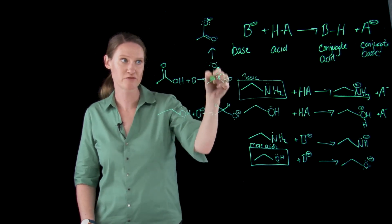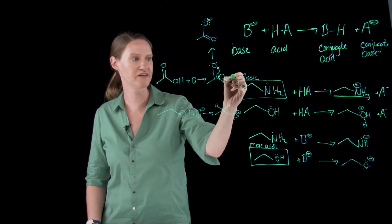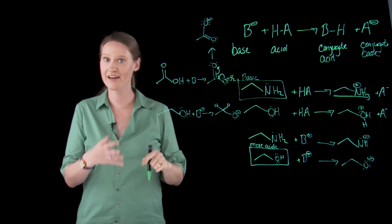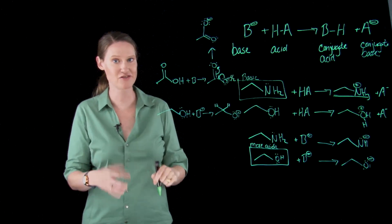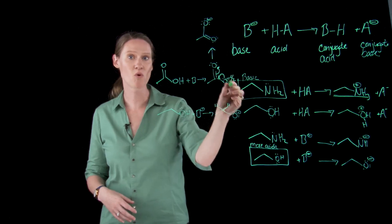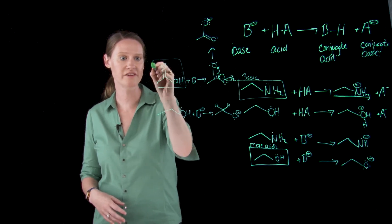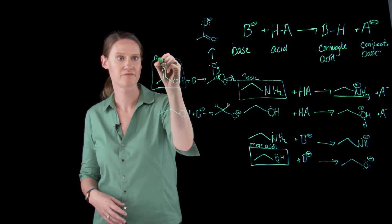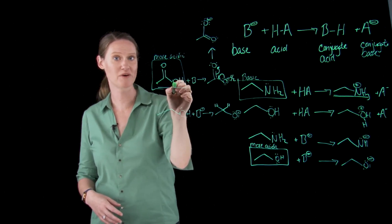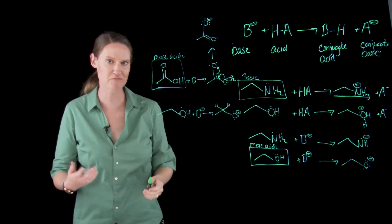This resonance form means that each of these oxygens is really only holding negative one half of the charge. Holding negative one half is less negative charge than holding the whole charge by yourself. So this one is more stable, which means that this one is more acidic. We could also believe that because this is called a carboxylic acid and this is called an alcohol. If acid is in the name it's probably pretty acidic.